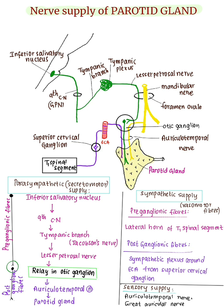The postganglionic fibers are derived from the sympathetic plexus around the external carotid artery from the superior cervical ganglion, and they pass through the auriculotemporal nerve. Sensory supply is derived from the auriculotemporal nerve and the great auricular nerve, C2-C3 fibers.